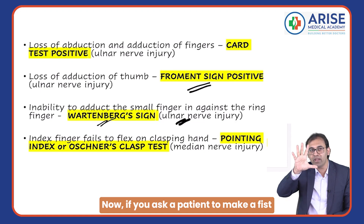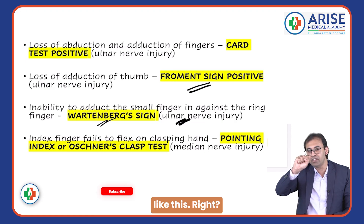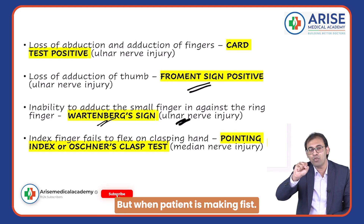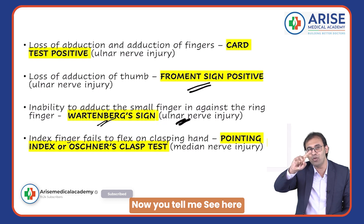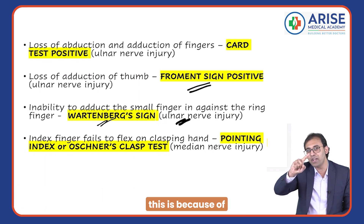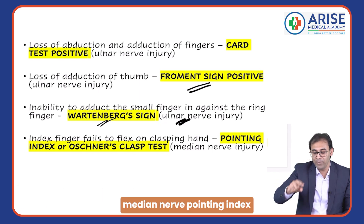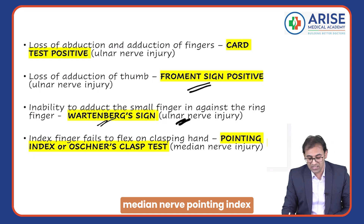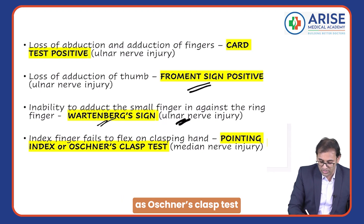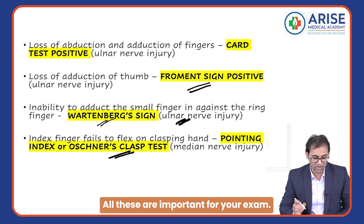If you ask a patient to make a fist but they do it like this, this is called the pointing index, and it is because of the median nerve. This is also called Ochsner's clasp test. All these are important for your exam.